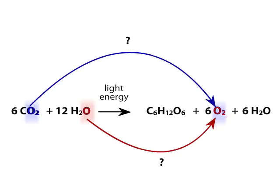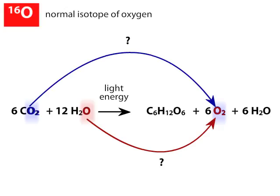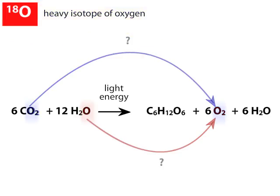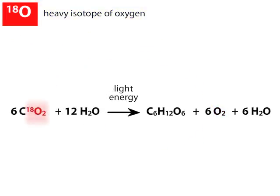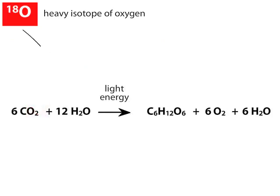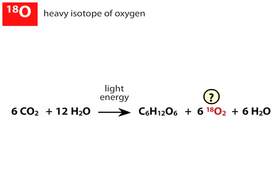This question was answered in the 1940s by Samuel Rubin and colleagues at UC Berkeley using isotopes of oxygen. The common isotope of oxygen is oxygen-16. By using the oxygen-18 heavy isotope of oxygen to label either the carbon dioxide or water reactants, the source of the oxygen released into the atmosphere can be determined.